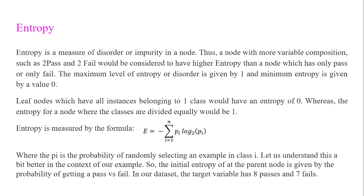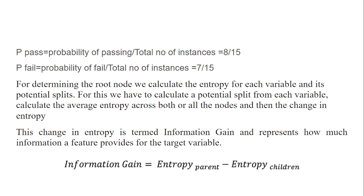Entropy is measured by the formula: minus summation from i=1 to n of P_i times log base 2 of P_i. Where P_i is the probability of randomly selecting an example in class i. In our problem, there are 15 students: 8 pass and 7 fail. So probability of pass is 8/15 and probability of fail is 7/15. Entropy equals minus of (8/15 × log₂(8/15) + 7/15 × log₂(7/15)), which gives 0.9968.